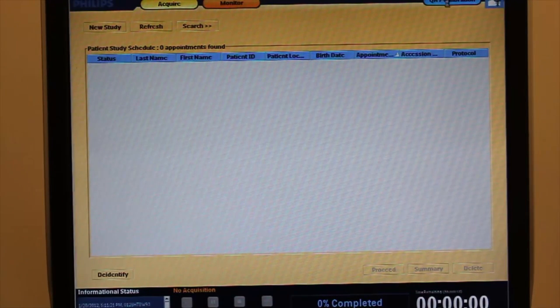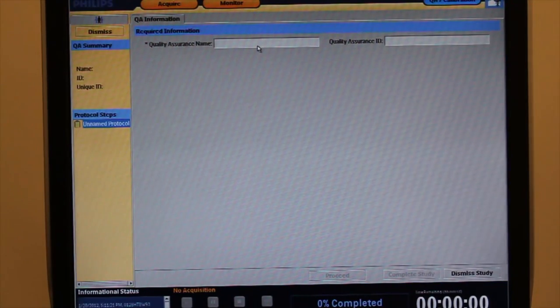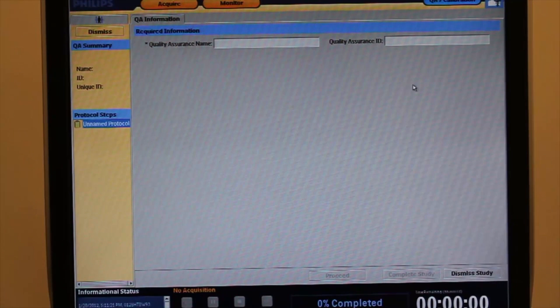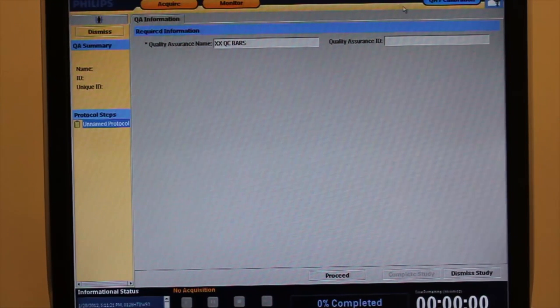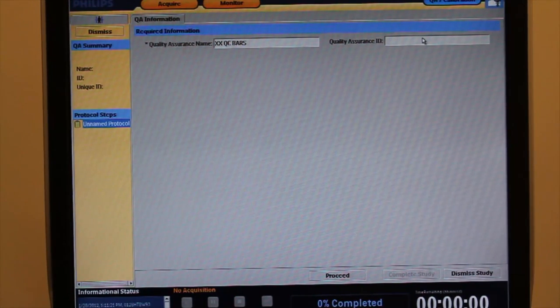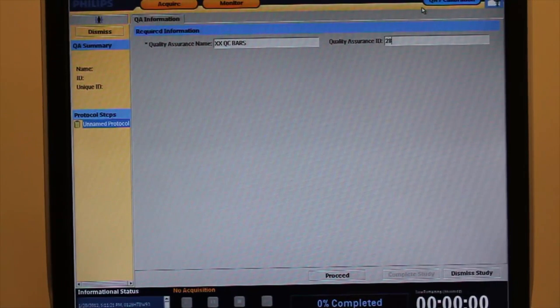Enter the QA calibration menu from the main screen of the Jetstream Acquisition Program. Entering the study data: Study name in capitals, double X space QC space bars. Study ID, date and your initials.